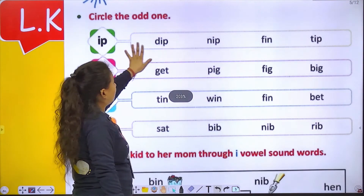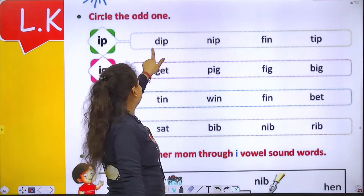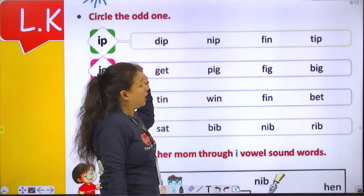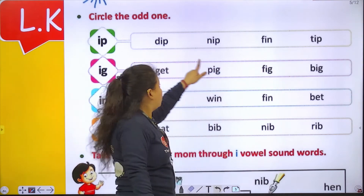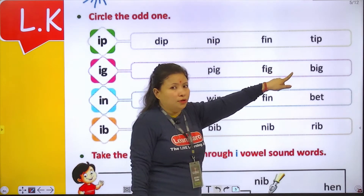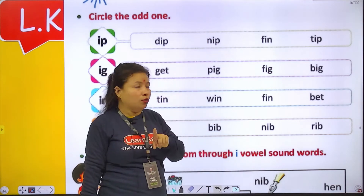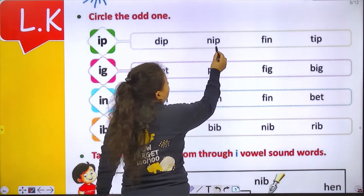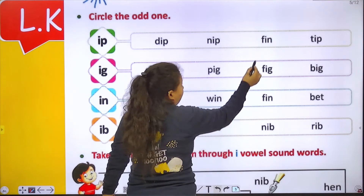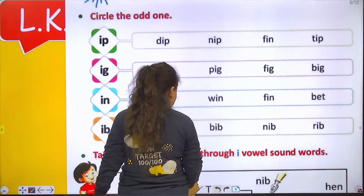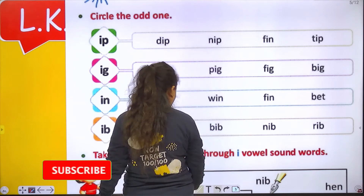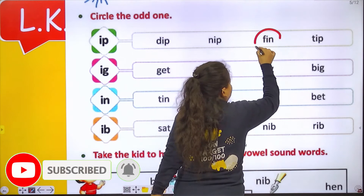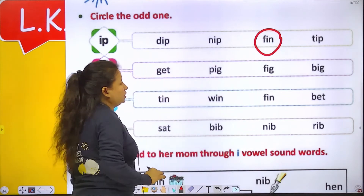IP. Dip — same sound at the end. Nip. Fin. And tip. So dip, nip, tip — these three have the same sound. But fin is a different sound. Dip, nip, tip — inkei same sound hai. Lekin fin mein last mein 'n' sound hai, to ye different hai, odd hai. Now we have to make a circle around fin.